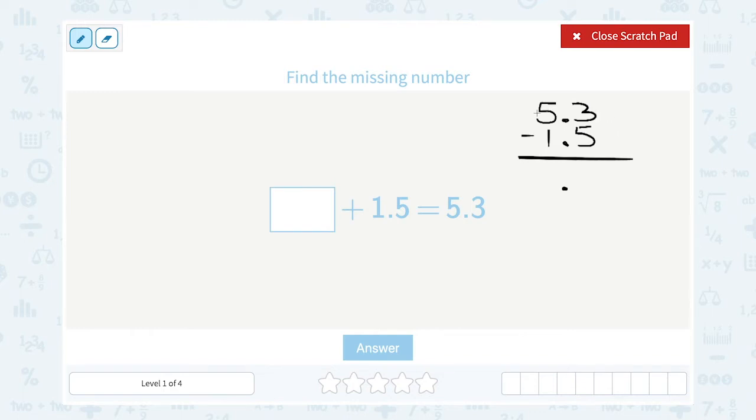Okay, 3 minus 5, I'm going to borrow from my ones place, I'm going to make this a 4. So that's going to be 13 minus 5, or 8.